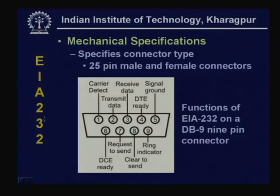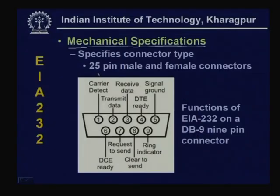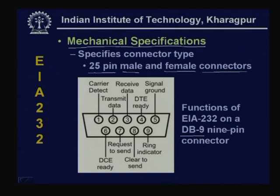We shall primarily discuss the EIA standards because these are very popular. This interface requires three different components: mechanical, electrical, functional, and procedural. The EIA 232 standard has got different versions A, B, C, and D — presently D. The mechanical specification specifies the connector type: a 25-pin male and female connector has been suggested and used for linking DCE with DTE. However, all 25 pins are not used — 9 of them are commonly used. Subsequently a DB-9, nine-pin connector was developed which is smaller in size and is commonly used.